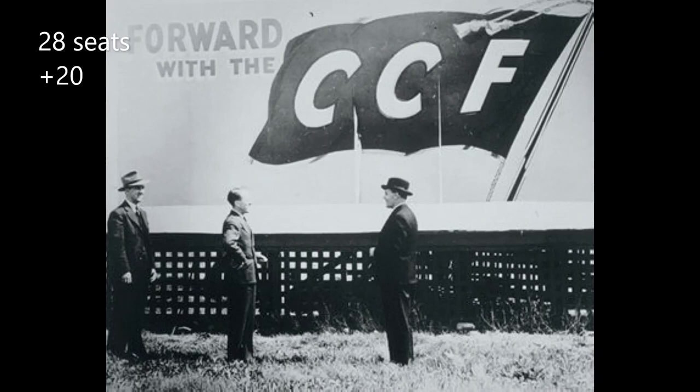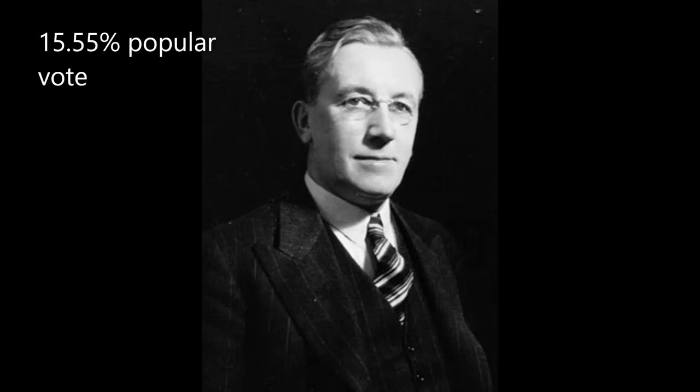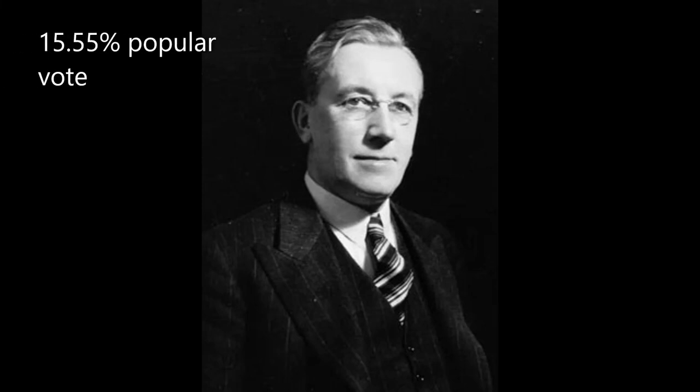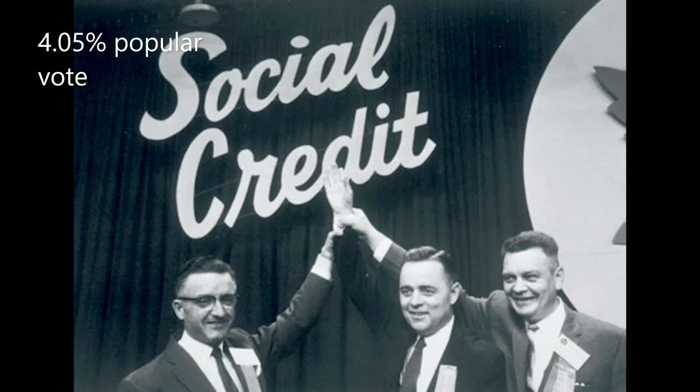In third place was the CCF with 28 seats, 20 more than the previous election, rewarding them with being the third largest party in the House of Commons. They received 15.55% of the popular vote. In fourth place were the Socreds with 13 seats, 3 more than the previous election, and 4.05% of the popular vote. The Social Credit Party won all their seats in Alberta, as they were unable to persuade voters elsewhere to support them.